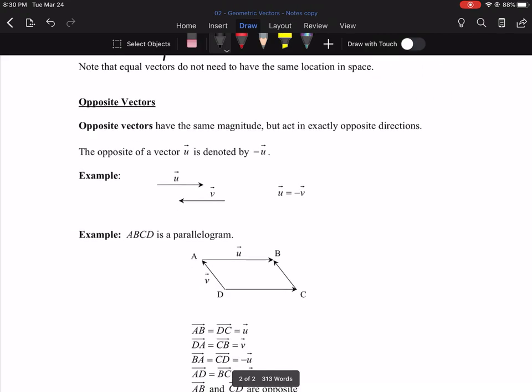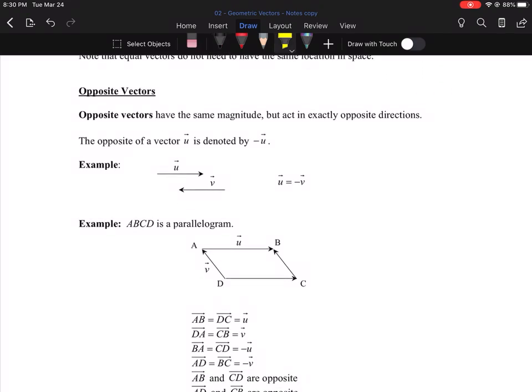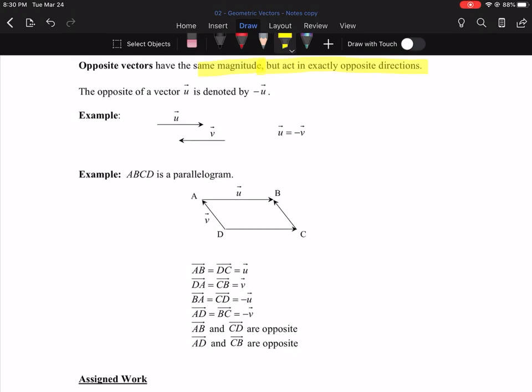Opposite vectors. Opposite vectors have the same magnitude, but act in exactly the opposite direction. So take a look at the example. There's U, and there's V, and U and V are the same length, but heading in the opposite direction. We call them opposite. And the other way we can write that is that U is equal to negative V. More on that in later sections, but it probably makes sense here that U would be negative V.